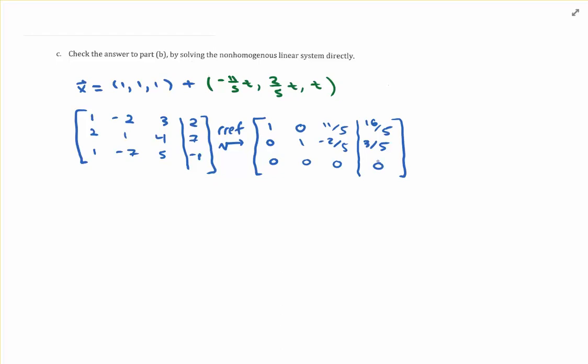Based on the entries in the RREF version of this matrix, we still have to define a parameter, and the variable that needs the parameter is z. Let's do that: let z equal t.